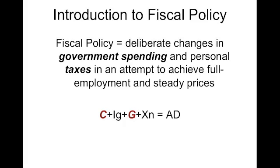In the equation C plus IG plus G plus XN equals AD, the way the government can shift the AD curve in the direction they want to reach potential GDP is by either changing the G part — the government spending part — or by changing the C part, the consumption part, by changing personal income taxes. If you change household taxes, you can change their spending habits.